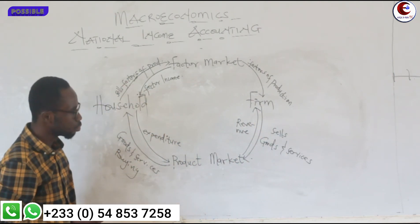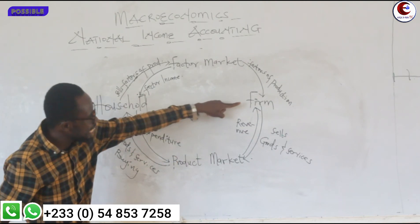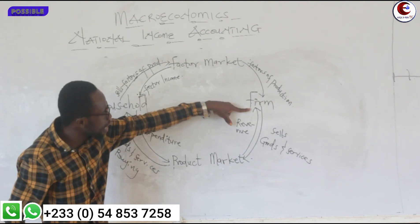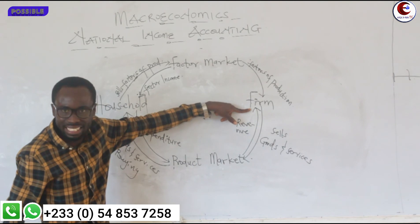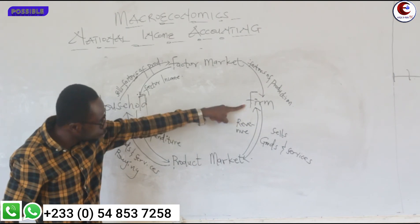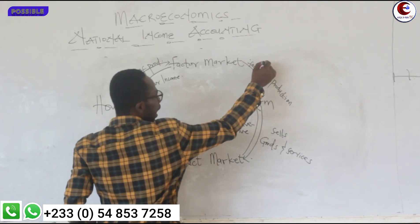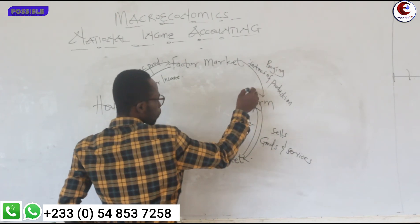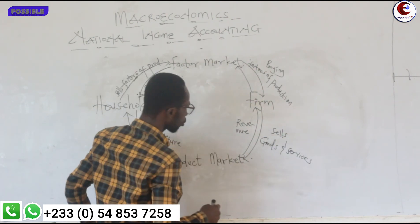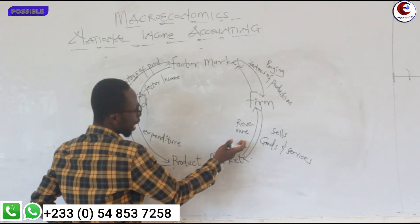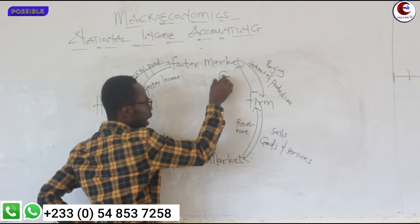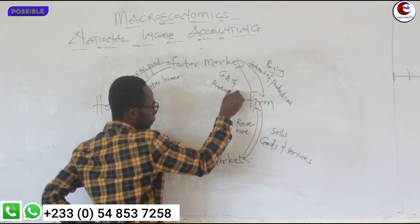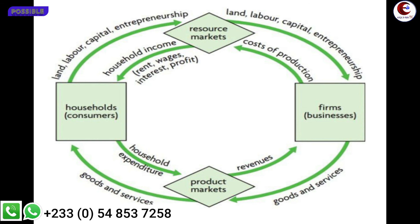So the firm is selling goods and services on the product market in order to get revenue from the household. And then the revenue that the firm is getting on the product market, they too are going to use the revenue to buy factors of production on the factor market. When they are buying factors of production, it will become the cost of production. So it goes on and on.